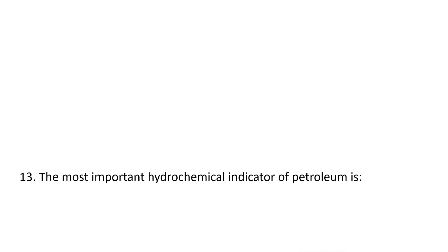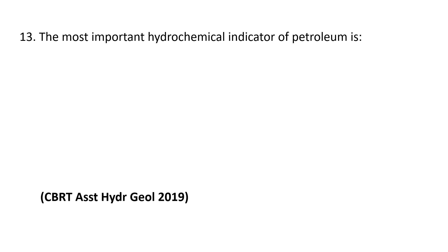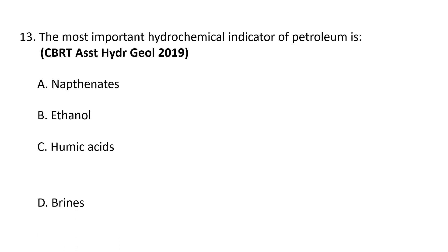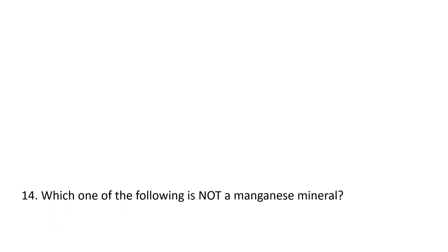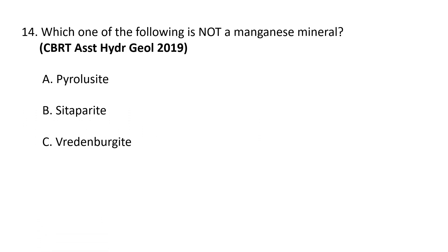Next question: the most important hydrochemical indicator for petroleum is — A) Naphthenates, B) Ethanol, C) Humic acids, and D) Brines. The most important hydrochemical indicator of petroleum is naphthenates. Naphthenes are cycloalkanes or cycloparaffins, also called naphthenes in the petroleum industry. These are saturated hydrocarbons containing structures with carbon atoms linked in a ring-like fashion. A, naphthenates, is the correct option.